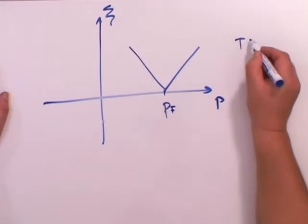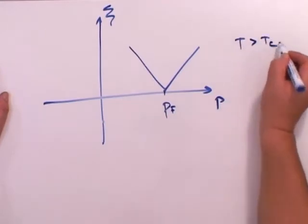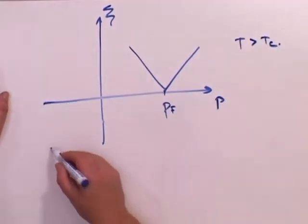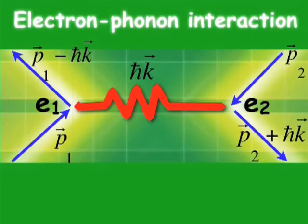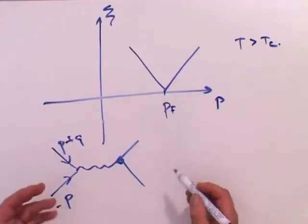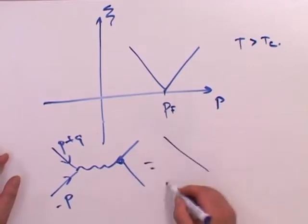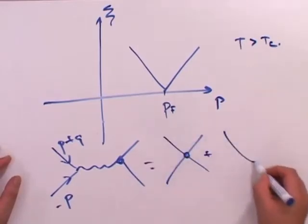When I take into account the possibility of interaction of electrons, minus p, p plus Q, due to electron phonon interaction plus Coulomb interaction, so our effective interaction, we will discuss these graphs.